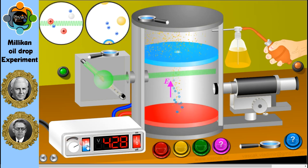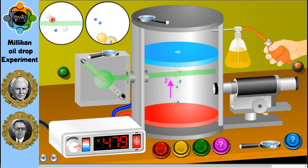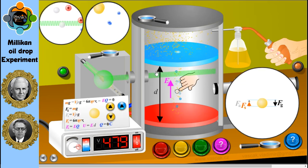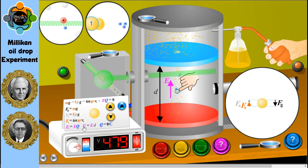By measuring the change in the droplet's rate of fall in the electrical field, Millikan and Fletcher were able to calculate the charge of the droplet. They then repeated the experiment with many droplets to obtain an average charge.